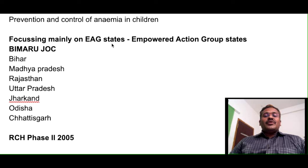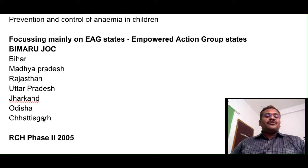The 7 EAG states can be remembered with the mnemonic BIMA JOC: BA for Bihar, MA for Madhya Pradesh, R for Rajasthan, U for Uttar Pradesh, J for Jharkhand, O for Odisha, and C for Chhattisgarh.